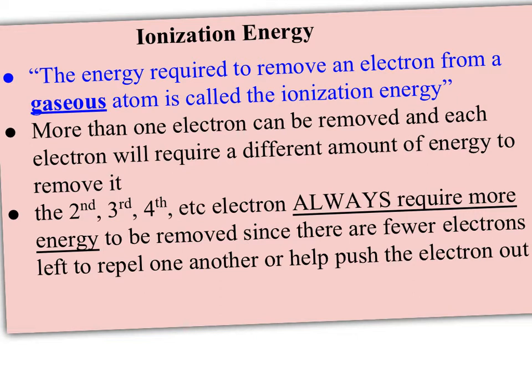Ionization energy is defined as the energy required to remove an electron from a gaseous atom. How much energy does it take to pull an electron off? More than one electron can be removed from an atom — in fact, every electron can be removed. That's what the fourth state of matter, plasma, is: when all the electrons have been removed. But each electron will require a different amount of energy to remove it.